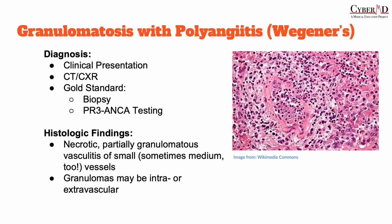Diagnosis of granulomatosis with polyangiitis is based on laboratory testing, imaging, and biopsy of the affected organs. Imaging such as a chest X-ray or CT scan can sometimes show cavitating lesions bilaterally in the lungs. The nail in the coffin is if you have PR3-ANCA antibodies combined with a biopsy. The biopsy is necessary and typically shows the classic triad of necrotic, partially granulomatous vasculitis of small and sometimes medium-sized vessels. These necrotizing granulomas can be both intravascular and extravascular, mainly occurring in the lung and upper airways.